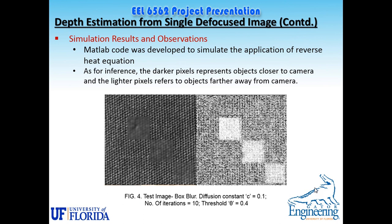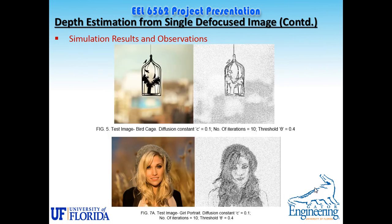For a real-life case, two images were used. The first is a birdcage closer to the camera with a far background. The result shows darker pixels captured on the cage and lighter pixels for the background, meaning the algorithm successfully detected objects closer to the camera. For the second image, a portrait of a girl with constrained blur, the girl is closer to the camera and appears as darker pixels, while the background is decoded as light pixels.